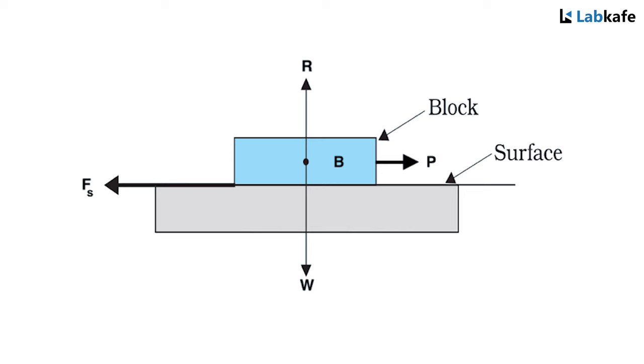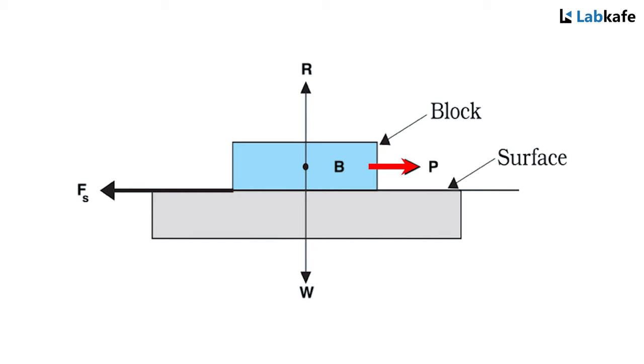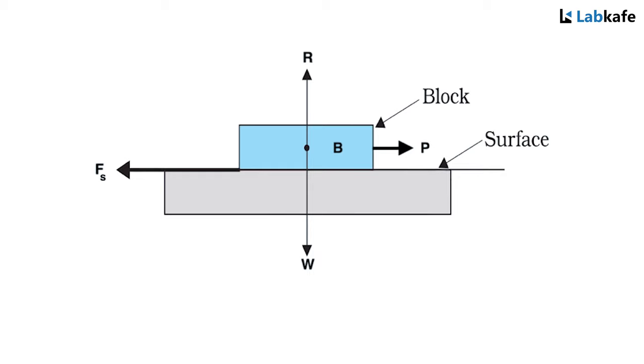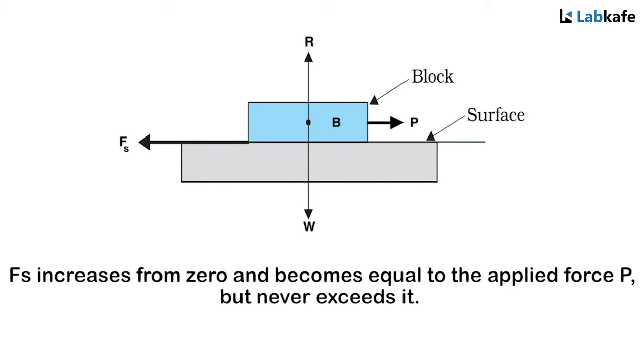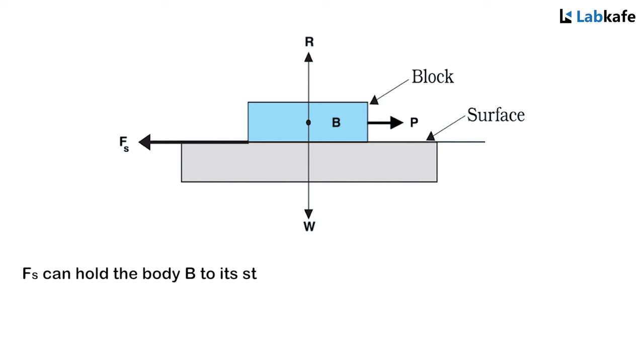If a small force P acts on B, a tendency of motion relative to the surface develops. Immediately a force Fs develops along the surface of contact opposing the tendency of relative motion. This is called force of friction or simply friction. Fs increases from zero and becomes equal to applied force P but never exceeds it. If Fs equals P, there is no motion. Therefore Fs can hold the body B to its static condition, hence Fs is called static friction.